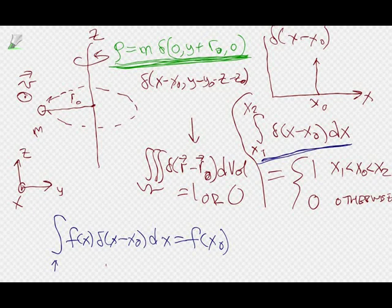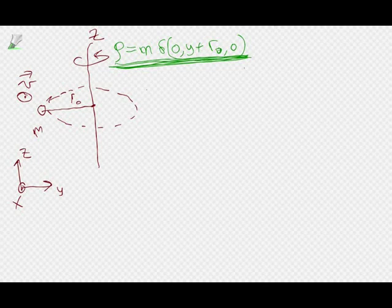You might ask: why bother doing integrals when this is clearly a discrete situation? I want you to know about these delta functions because they're amazingly useful — they allow you, when you have an integral expression, to put in something that is a point mass. Delta functions are how you do it. So now I know what my density as a function of x, y, z is, and I can work out my I_zz.